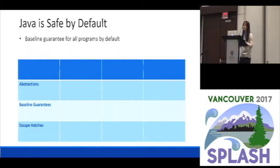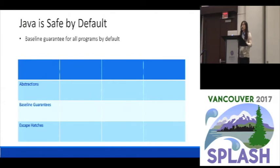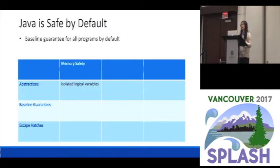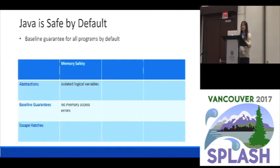Now let's take a step back and think about Java. Java is a safe language, or it tries to be a safe language. In many design aspects of Java, it follows the principle of safe by default. By safe, I mean it protects the basic program abstraction. With some program abstraction, you can have baseline safety guarantees for all programs by default. For example, think about memory safety — it protects the abstraction of logical variables. You can have an infinite number of logical variables, but they should all be isolated from each other and should never overlap. If you can protect this kind of abstraction, you get the baseline guarantee that no memory access errors can ever happen and you will never see memory you are not supposed to see.